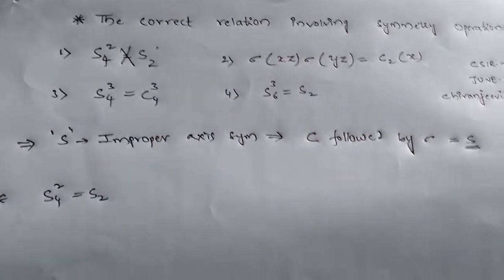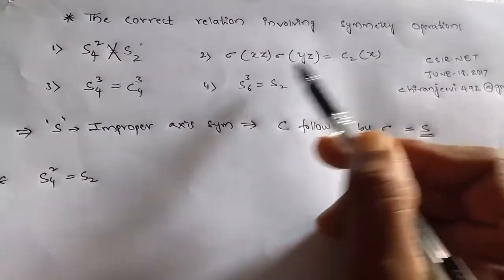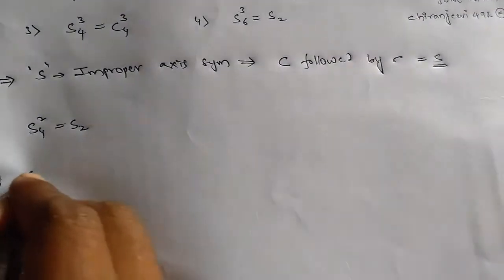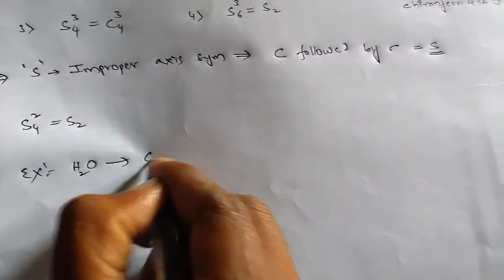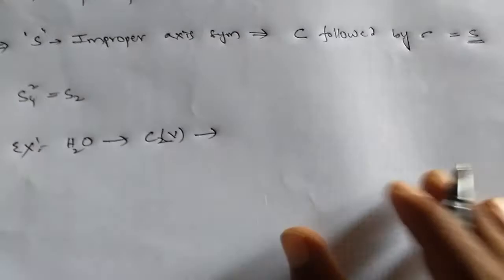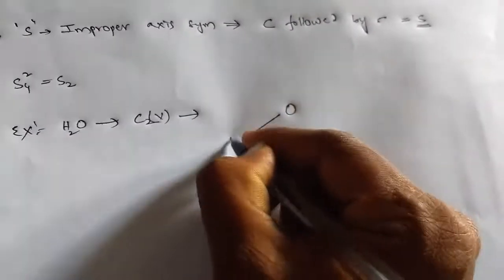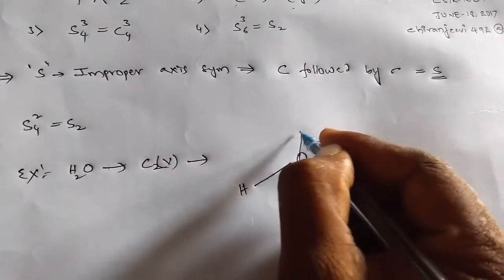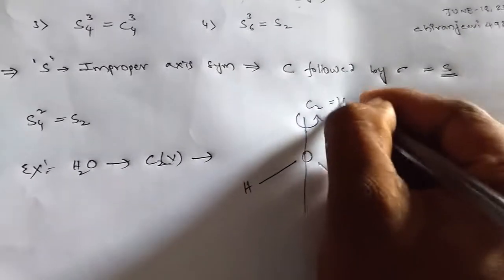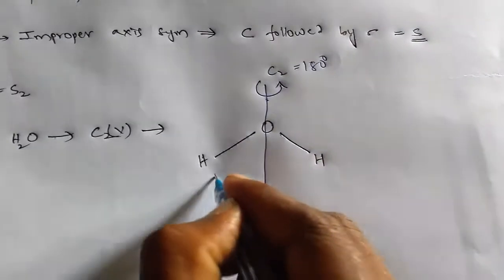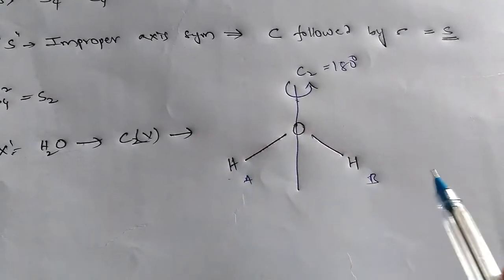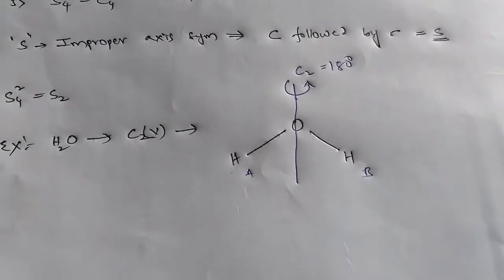Next, checking option two: σxz · σyz = C2x. We have a C2 proper axis of symmetry. I'm giving the example of water, H2O, which belongs to C2v. Water has C2 proper axis of symmetry — by 180 degrees rotation, the two hydrogens flip onto each other. So H2O has C2 proper axis of symmetry.